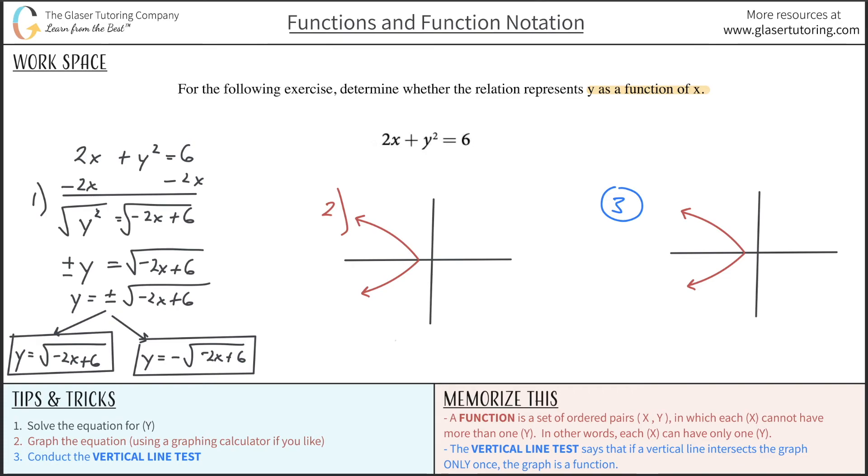So what you want to do is you want to draw a vertical line through your graph. And if it intersects it more than once, the graph is not a function. So it intersects the graph here and here. Well, it failed that vertical line test, and therefore the graph is not a function.